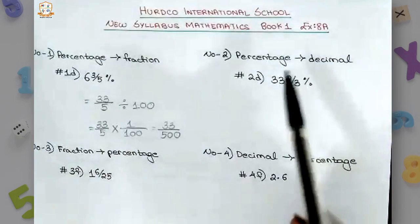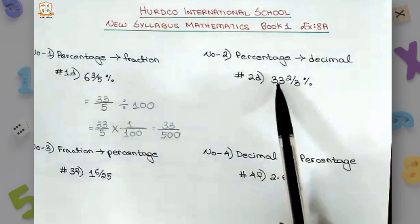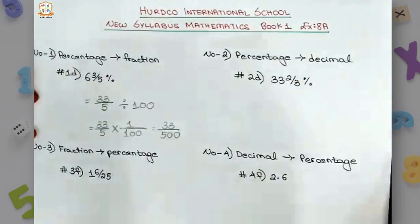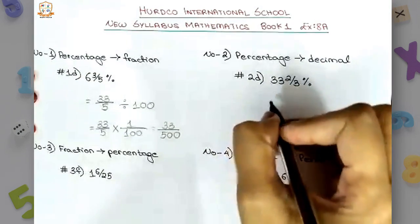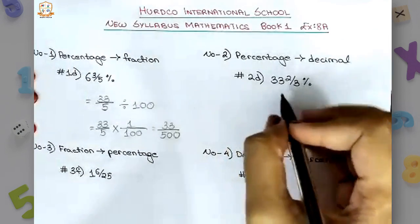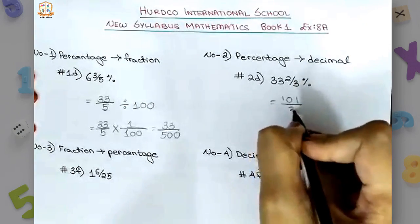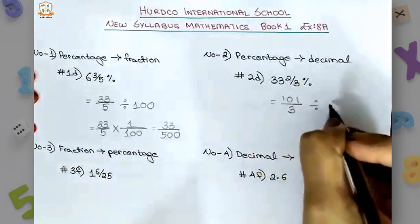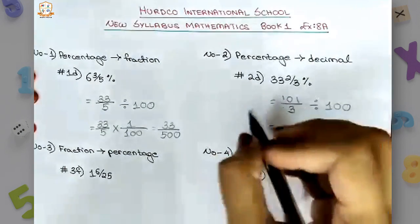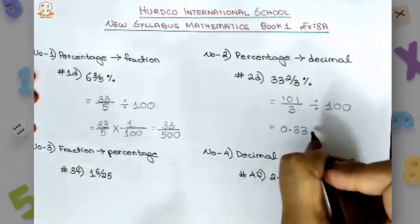Number 2 asks us to convert percentages into decimals. Number 2d, the number given is 33 whole 2 by 3 percent. Now if we need to convert into decimals, first we write the mixed number in fraction form. So this can be written as 101 by 3, divided by 100. The decimal value for this will be 0.337.